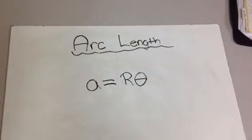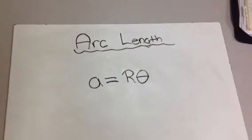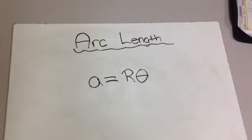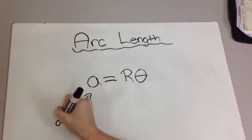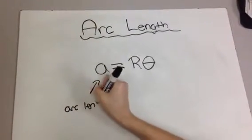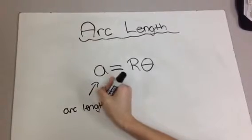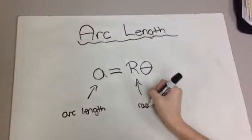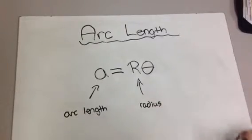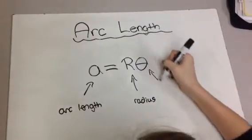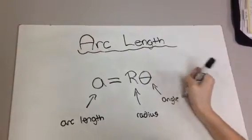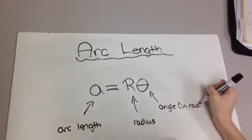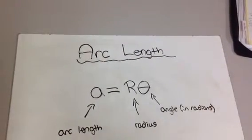The formula for arc length is, as we already mentioned, R theta. The variables for arc length are A, which is arc length; R, which is the radius; and theta, which is the angle. This formula is only true when theta is in radians.